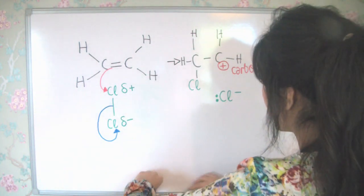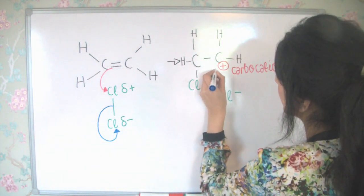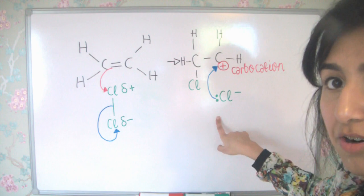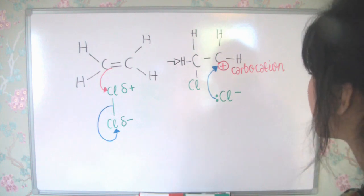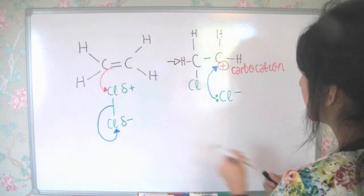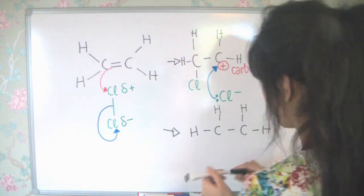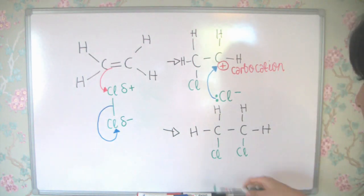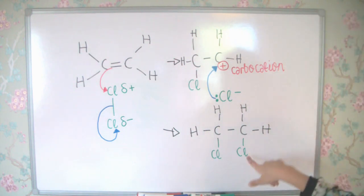So naturally, there is a force of attraction between this lone pair of electrons and the carbocation. So the electrons will come from the chlorine ion to the carbocation. So there's our curly arrow showing that movement of electrons. So that gives us our final molecule, which is dichloroethane, with the two chlorine atoms bonded to the carbons, like so.